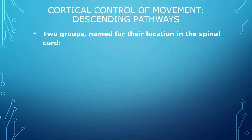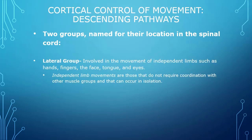There are many of you interested in exercise science or wanting to become physicians, so it's important for the motor system that we talk about all of these parallel systems and what they do. There are two major categories of pathways named for their location in the spinal cord. We have a lateral group involved in movement of independent limbs — hands, fingers, face, tongue, and eyes.